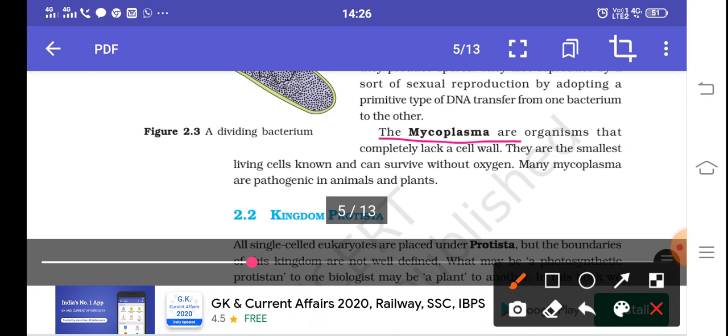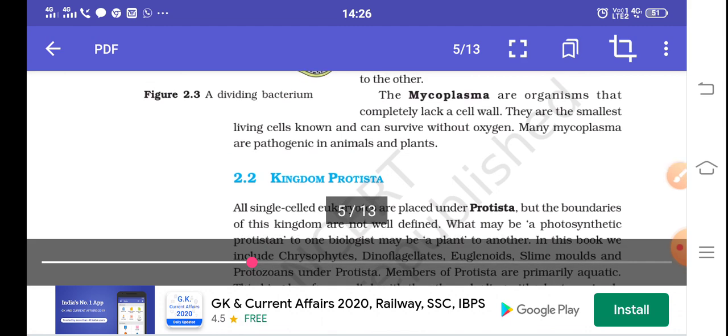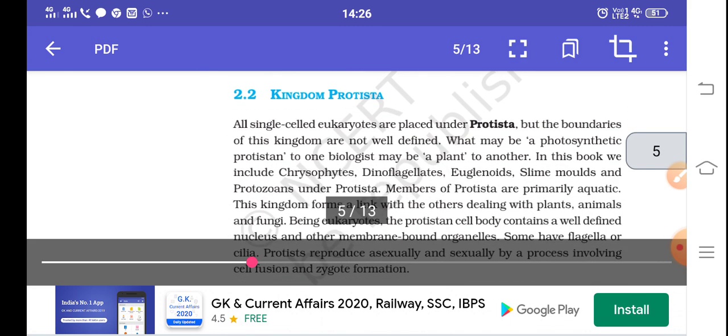The most important feature of Eubacteria is Mycoplasma, which lacks cell wall. This is the smallest living cell, a very important question. The smallest living cell is Mycoplasma and it can survive without oxygen. What are Mycoplasma? Eubacteria which lack cell wall, the smallest living cell, and can survive without oxygen. They are pathogenic or disease-causing.